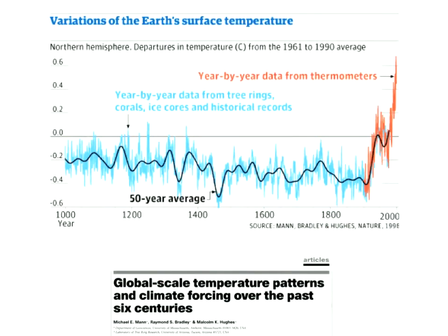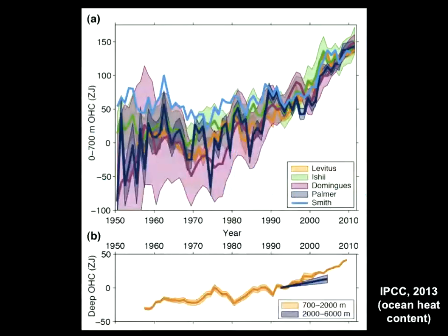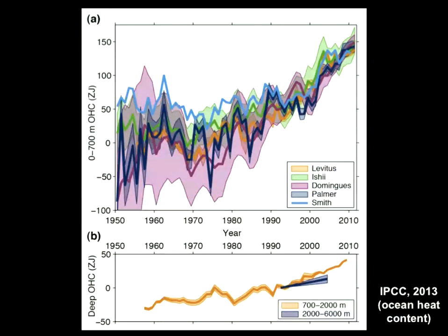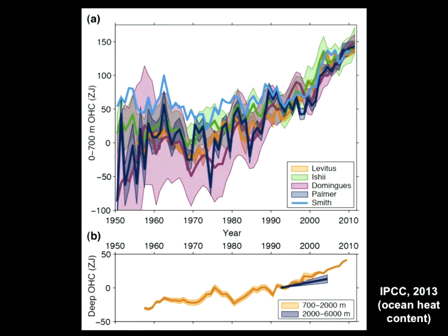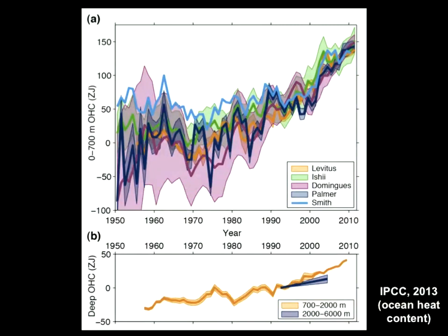We're also familiar with the hockey stick graph, combining different types of data from ice sheets, tree rings, and thermometers. There's been contention around it, but essentially this landmark 1998 paper shows that warming is currently much more intensified than in the past. In the oceans there are lots of uncertainty — people have looked at sea surface temperature, but the effects in the middle and deep ocean are largely unknown, though we do see an increasing trend of change in ocean conditions.